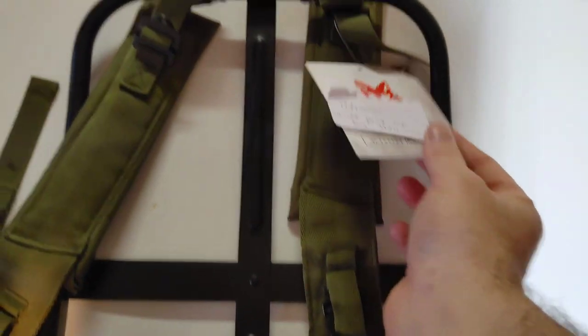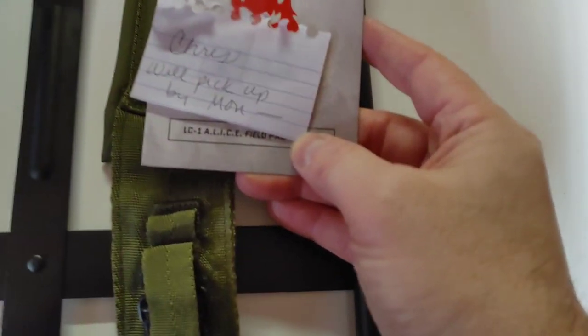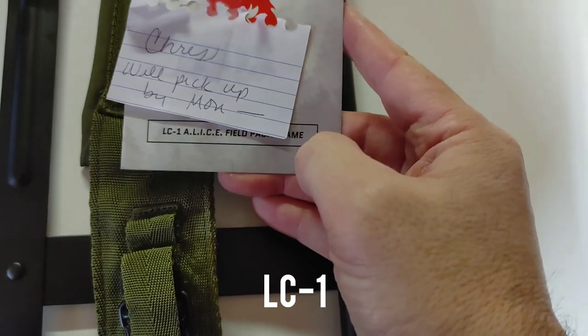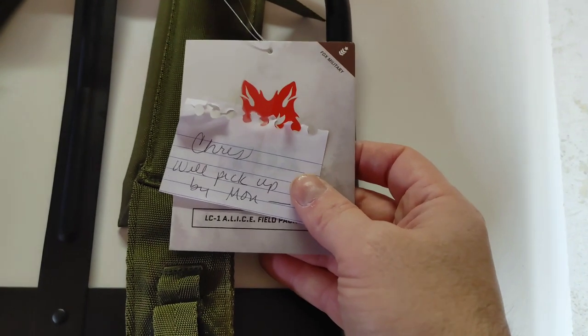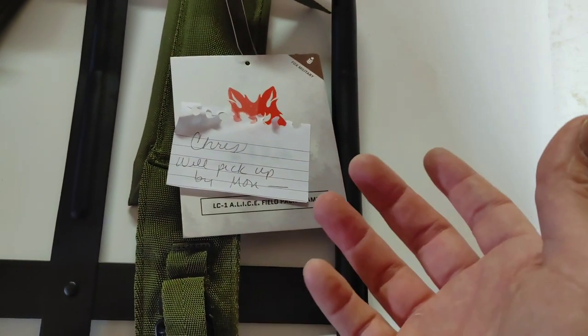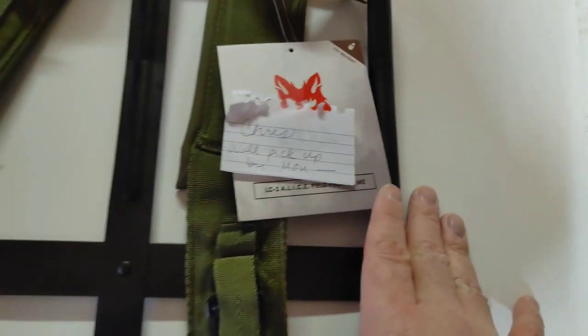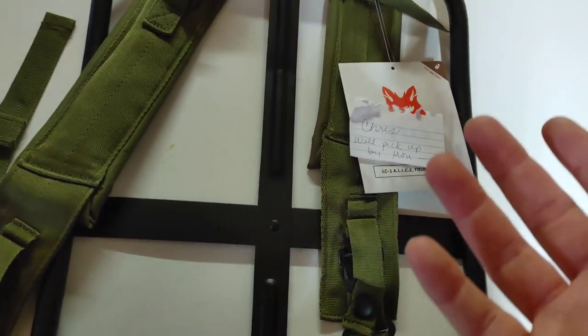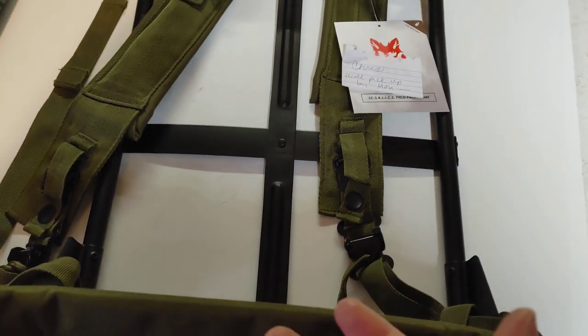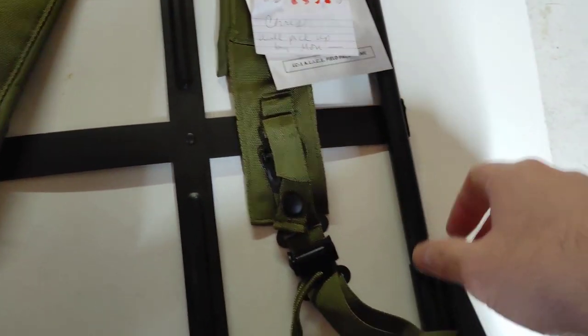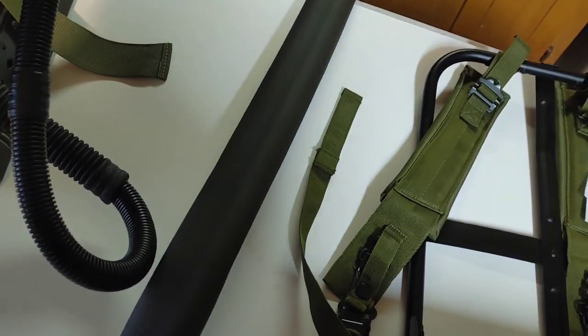This is my Alice frame. That is the first thing you are going to need and you are going to need an LC-1. So make sure whatever Alice frame you get, it is an LC-1. I called around locally. I didn't buy this online. There was a local military surplus and they held this one for me and I got it a lot cheaper than what you would pay for online. So if you're shopping around for Alice frames, look at your local military surplus. This one cost me $60 cash in person.